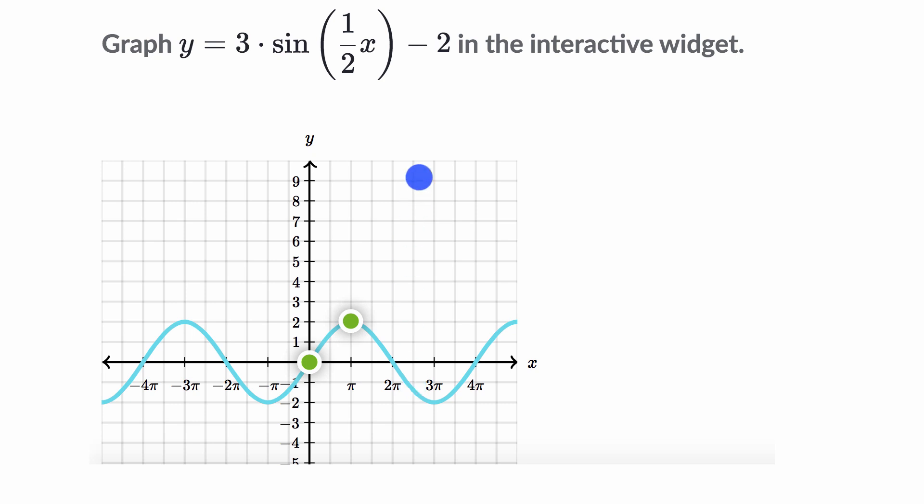But the first way I like to think about it is what would a regular—if this just said y equals sine of x, how would I graph that? Well, sine of 0 is 0. Sine of π/2 is 1. And then sine of π is 0 again. And so this is what just regular sine of x would look like.